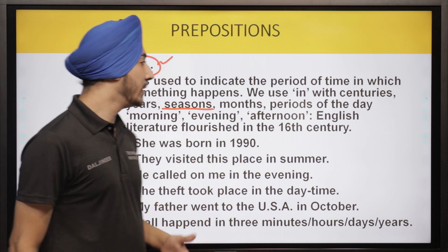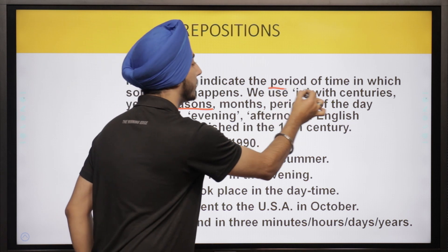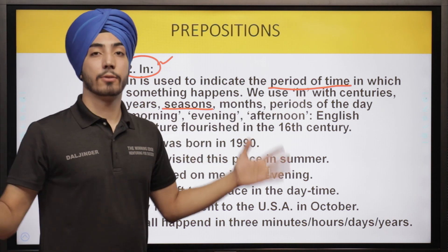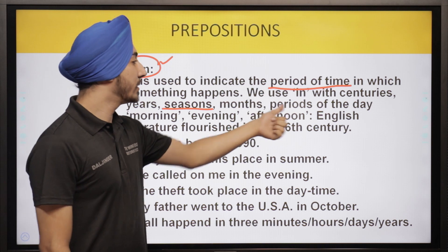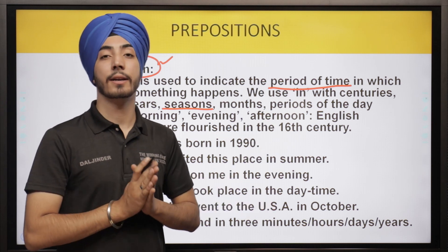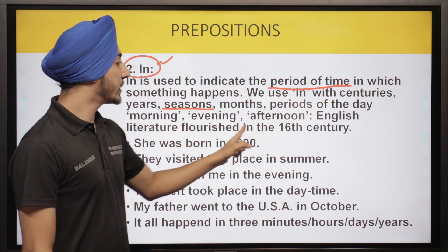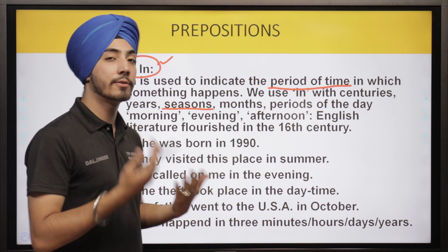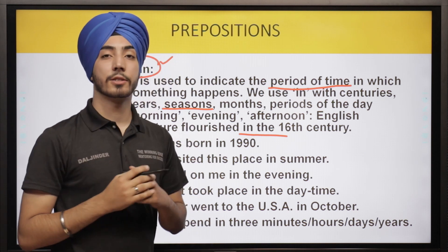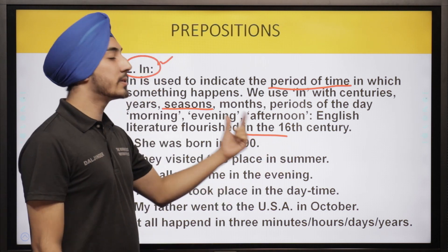'In' is used to indicate the period of time in which something happens — it is a period, not a specific time. We use 'in' with centuries, seasons, months, and periods of the day. For morning, evening, and afternoon, we use 'in' — not 'at.' Example: 'English literature flourished in the 16th century.' The 16th century is a long period from start to end, so we use 'in.'